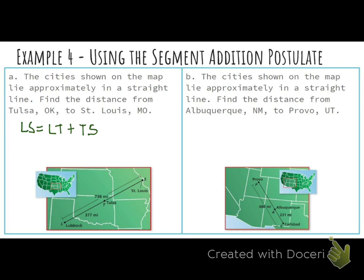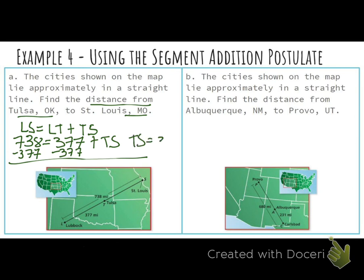Based on our picture, which parts do we know? Tulsa to St. Louis and Lubbock to St. Louis. How much did we have? 738. And then we know one other part. Lubbock to Tulsa. And how much is that? 377. And the part that they're asking us to find is find the distance from Tulsa to St. Louis. So we're looking to find that T-S. We've got to get that T-S by itself. How do I do it? We're going to subtract. Subtract 377. What did you get? 361. 361. T-S equals 361. Perfect.